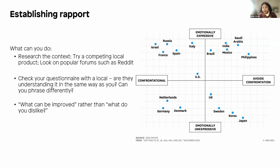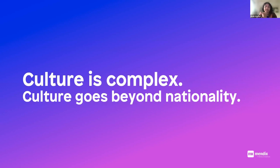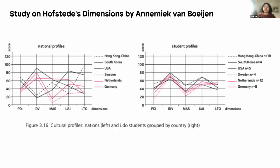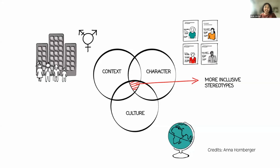Now toward the conclusion. Three key takeaways: First, culture is complex and goes beyond nationality. Culture can be influenced by your profession, where you live, and many other values. One country cannot have one culture — there are so many subcultures. Second, borrowing from Farai: doubt can be good. It makes you stop and look around. Including culture as a lens when trying to understand a person's context and character will help us create more inclusive mental models, even if we still form some stereotypes.